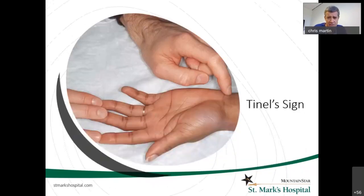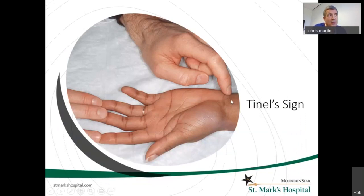Tinel's sign is just tapping on an irritable nerve at the edge of the carpal tunnel, where that median nerve goes in. The nerve tends to be irritable, and if you tap on it, it will give people an electrical sensation or a shock that goes down to the affected fingers.